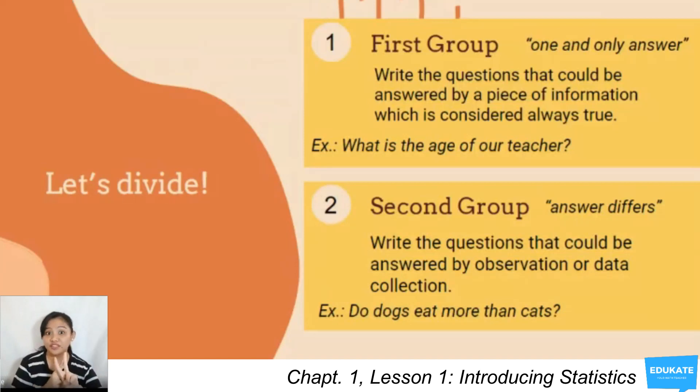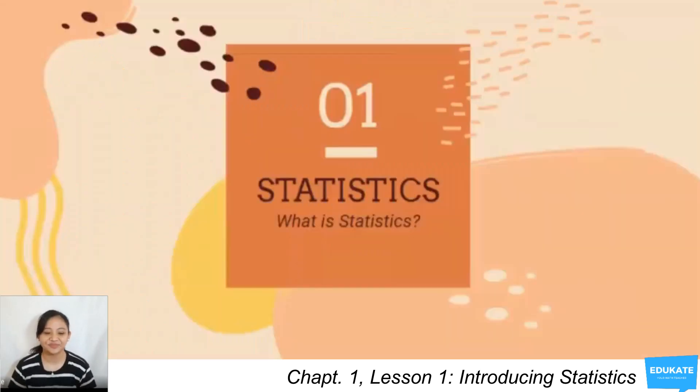Notice that in the two groups, data is needed to be able to answer the question. Using data to find an answer or a solution to our problem or inquiry is what we call the statistical process. Statistical process is under statistics, so let's first tackle what is statistics.